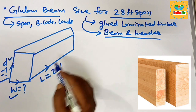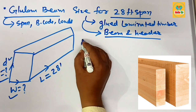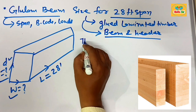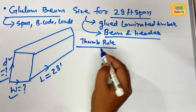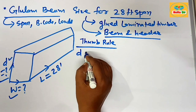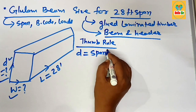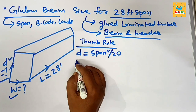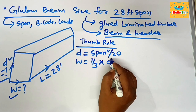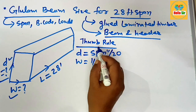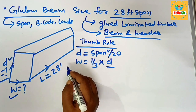We calculate the sizing using a thumb rule. As per the thumb rule: the depth of the glulam beam equals the span in inches divided by 20, and the width section of the beam is one-third of the depth. This is the thumb rule to find the correct glulam beam size.